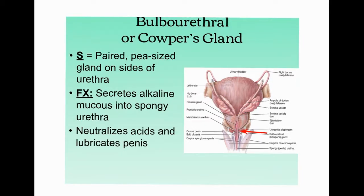The bulbourethral — or Cowper's — glands are located inferior to the prostate and urinary bladder. Their secretions are alkaline (pH greater than 7), which helps neutralize acids remaining in the urethra from urine. They also help lubricate the distal end of the urethra within the penis.